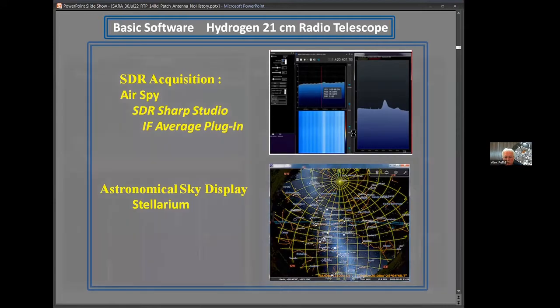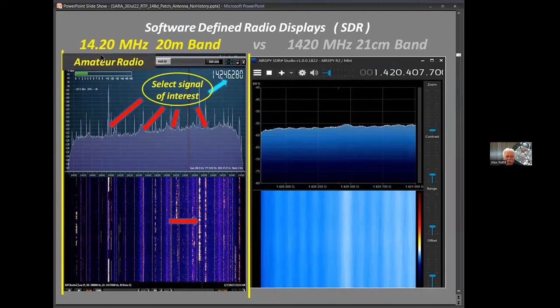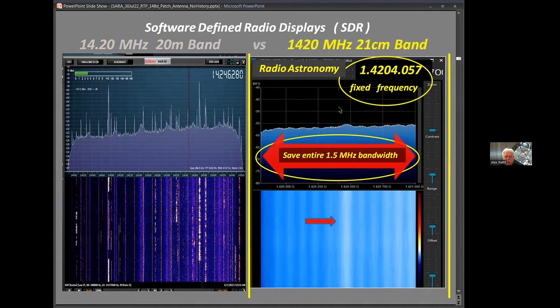I thought this was kind of an interesting comparison. Those of you in the amateur radio world are familiar with SDR radio displays in the 20 meter band where you have lots of individual frequencies and you might narrow band filter a particular band for listening or recording. In contrast, going up to the 1400 megahertz band your signal looks like this, composed of these narrow bands, and you want to save the entire bandwidth. You don't tune the frequency, you allow the software to stay fixed. Also take a look at these filter ripples in the band.